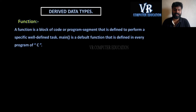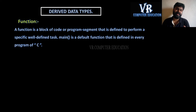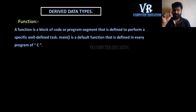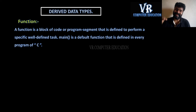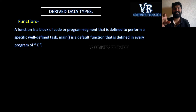Next is function. A function is a block of code or program segment that is defined to perform a specific, well-defined task. A function contains a block of code — meaning opening and closing braces — and inside those braces we write some code. That block of code is defined to perform a specific task.